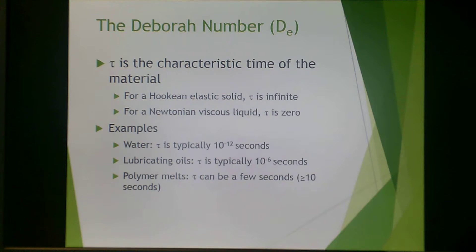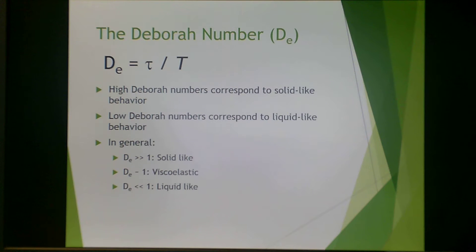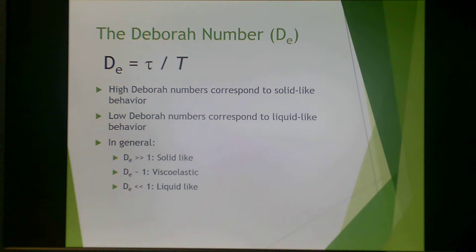Some examples: tau for water is approximately 10 to the negative 12 seconds. For lubricating oil, tau is 10 to the negative 6 seconds. For polymer melts, tau can be a few seconds. The Deborah number is dimensionless — tau is in seconds and so is t. High Deborah numbers correspond to solid-like behavior, whereas low Deborah numbers correspond to liquid-like behavior.